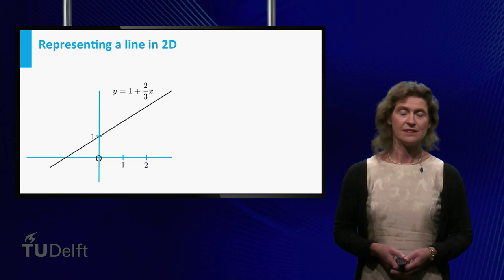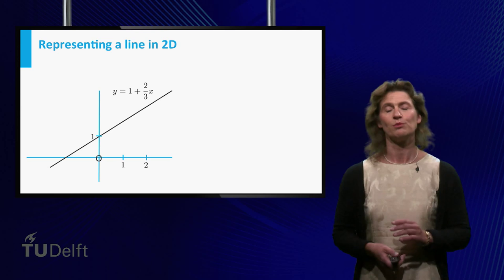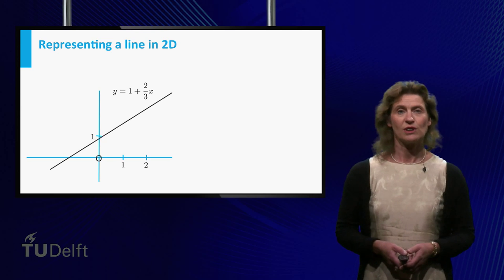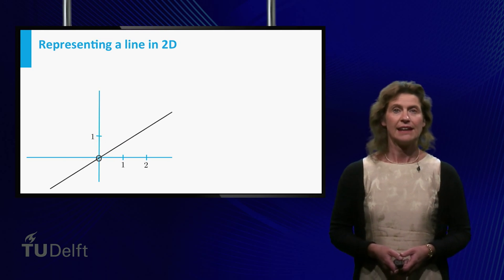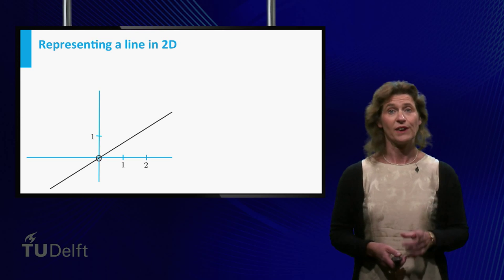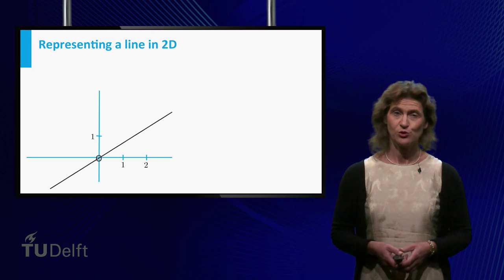Now translate this line such that the starting value becomes 0, so the line passes through the origin.